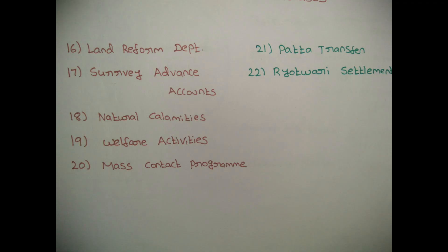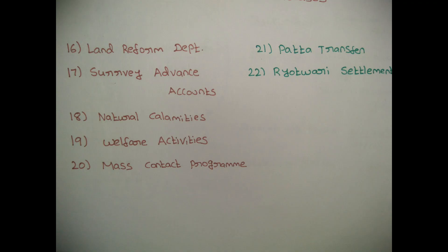Next one is Survey Advanced Account. In the 18th topic — Natural Calamities. We have to do what we need to do about natural calamities. The 19th is Welfare Activities. When you have a video, they will pay for a pension. If you have a divorce or a husband's situation, you will pay for a pension. You are covered under welfare activities.